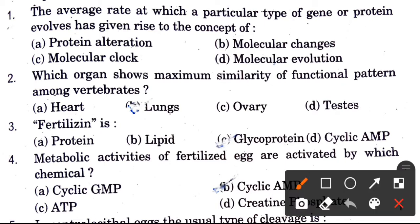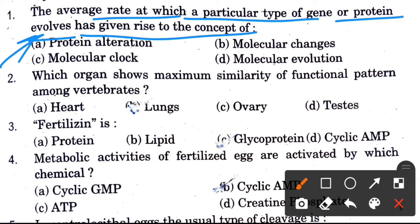First question: The average rate at which a particular type of gene or protein evolves has given rise to the concept of — options are protein alteration, molecular changes, molecular clock, and molecular evolution. The answer is molecular evolution.